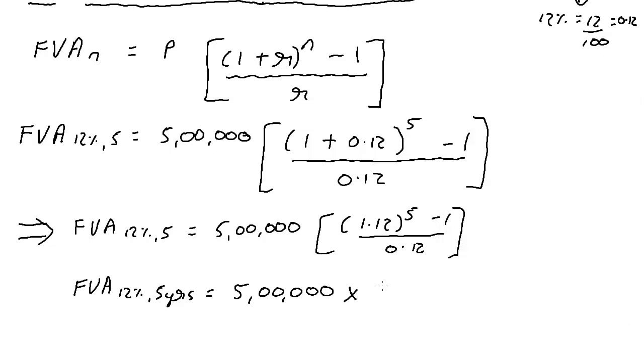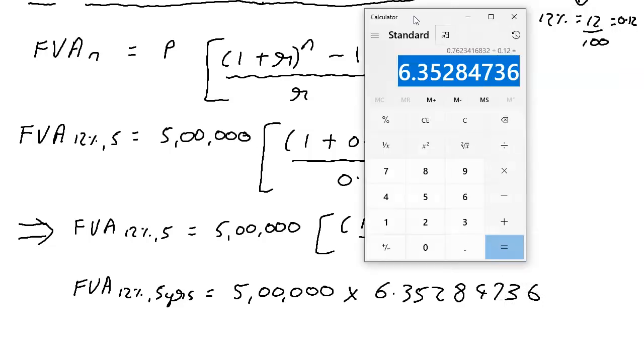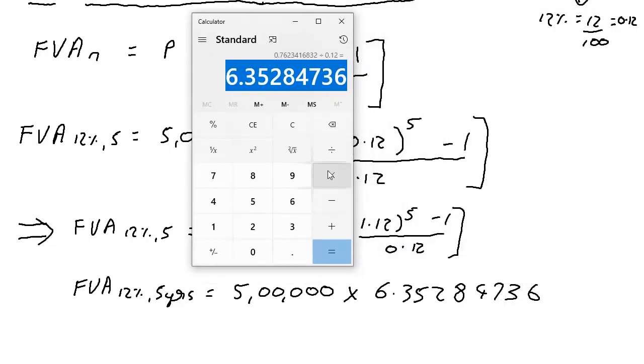So it's going to be into 6.35284736. Anyway, you're going to do it on the calculator, so if you want to write up to six decimal places and leave it, and then just multiply this whole number into 5 lakhs and see exactly two decimal places I get. So it made sense to write all of them down.